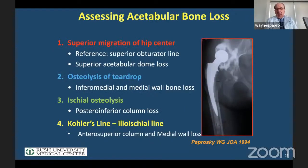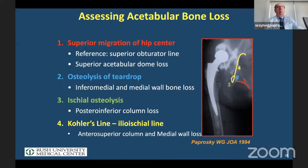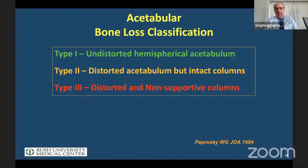The main assessment: the first thing we look at is ischiolysis and the presence of a teardrop. If you see a teardrop, the posterior inferior wall is intact. We want to look at migration. If migration is greater than three centimeters, you have to assume you'll need more than just a simple large cup fixed with screws. If migration is up and in and Kohler's line is compromised, that's an even more involved case.